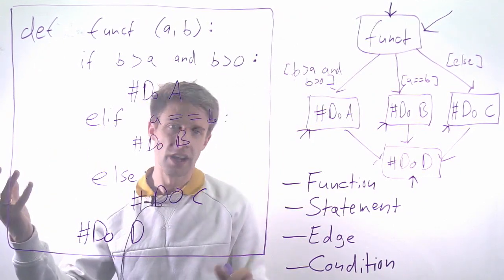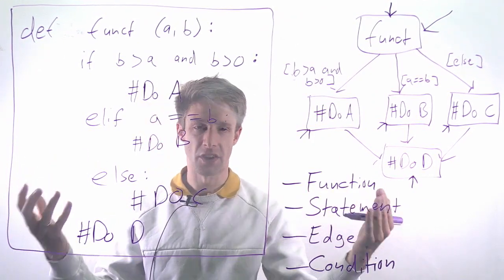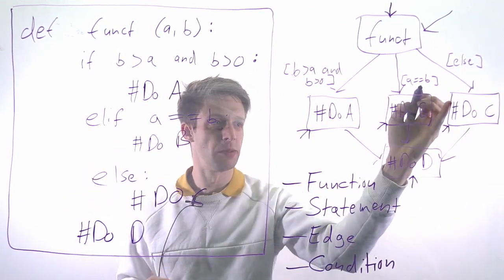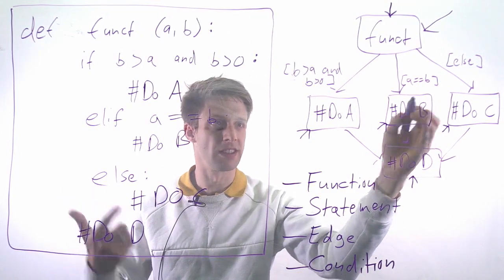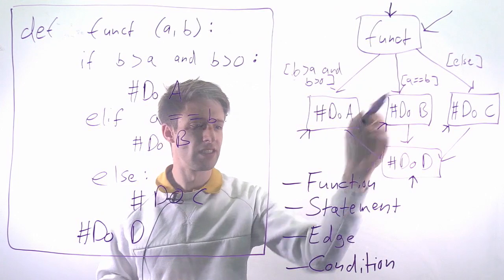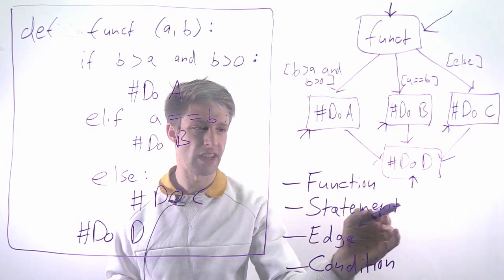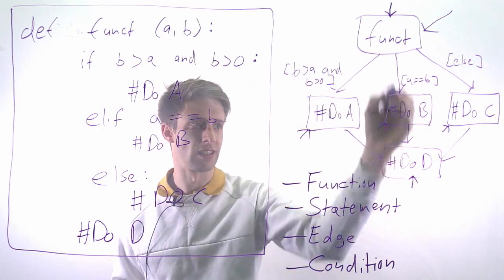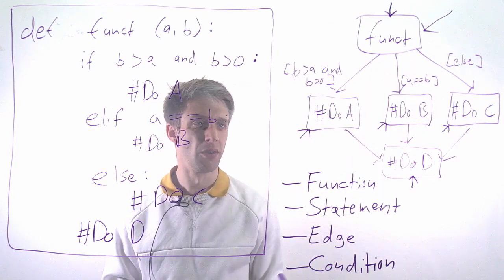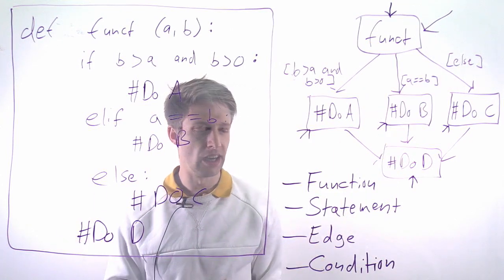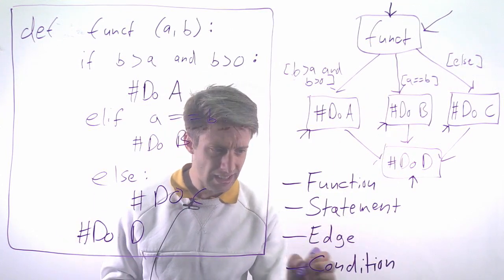We look at each condition, which has to at least once evaluate to true and at least once to false. So this needs to be true once and false at least once. This needs to be true at least once and false once. In our case, it's exactly the same again as with statement coverage. If we do three test cases that go into these three different branches, we have basically each of these statements at least once true and at least once false.